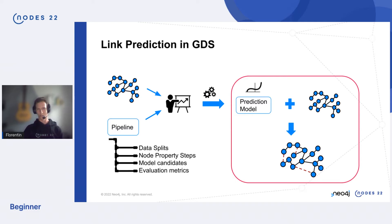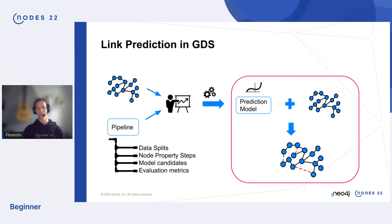The output, shown on the right side, is a prediction model. That model takes two nodes and returns how likely it is that a link exists between them. You can then apply this to your data to get the new predictions you're looking for.